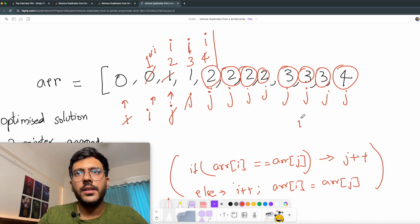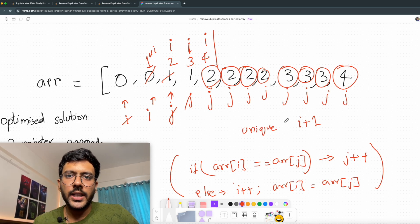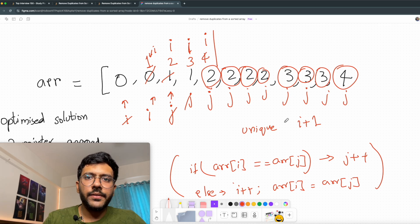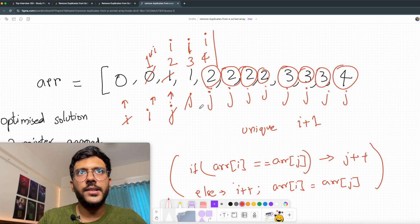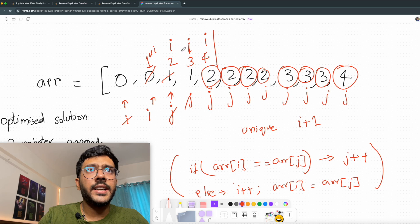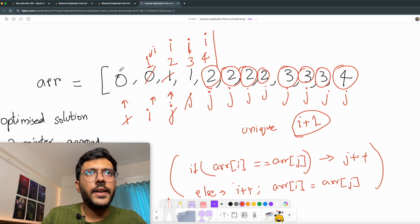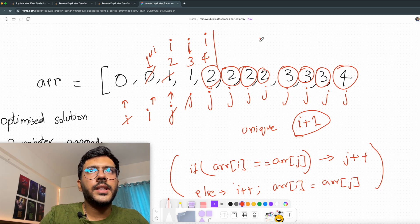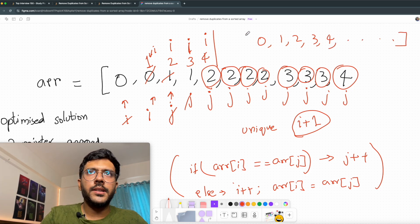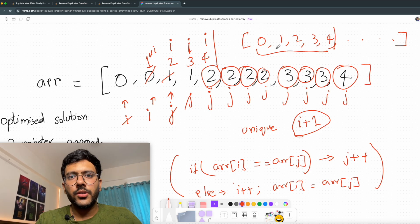Now we need to return i plus 1 as the number of unique elements because we were incrementing i only when we got a unique element when j got a new element. So i will represent the end of the array where unique elements are present. For example, i is here at 4, and if you look, this is the index 4 also. So we know that the array has 5 unique elements and we have also modified the array to contain only unique elements. For example, the new array will look something like this: 0, 1, 2, 3, 4 and we don't care about the remaining elements. So the first 5 elements are all unique which were present in the original array. So this is going to be my solution.